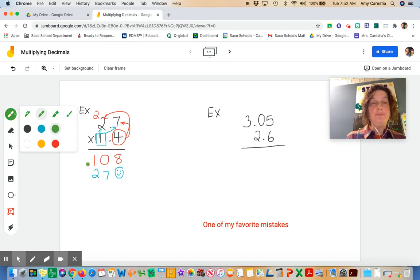Now once we have our products, we need to add those to find the sum. 8 plus 0 is 8, because remember that place value just carries no weight, it's just a holder for us. 0 plus 7 is 7, and I have 1 plus 2 is 3.